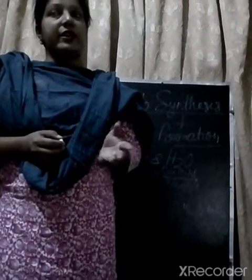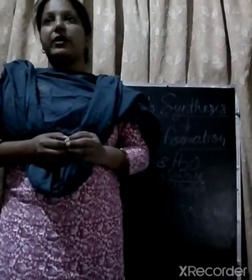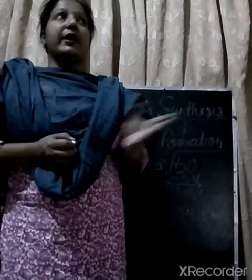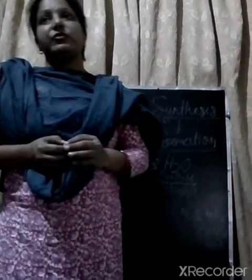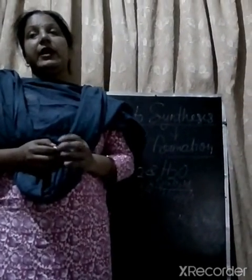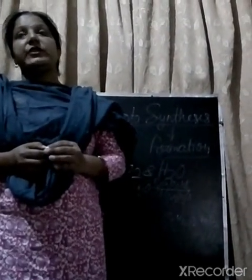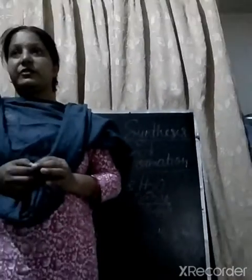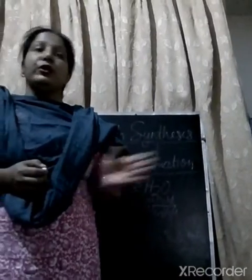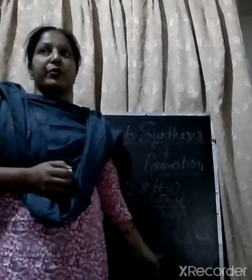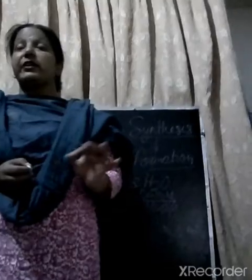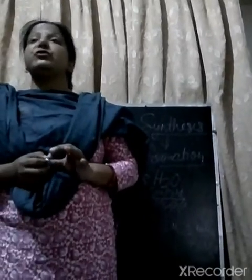The light reaction, as the name suggests, happens in the presence of sunlight. The dark reaction occurs at night in green plants. It is a very important reaction that occurs in the mesophyll cells of the plant leaves.